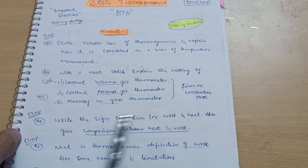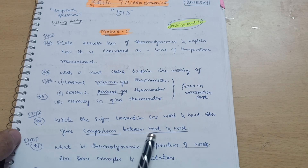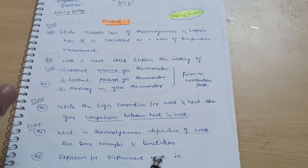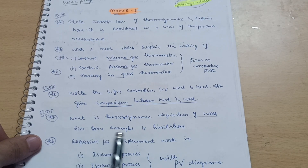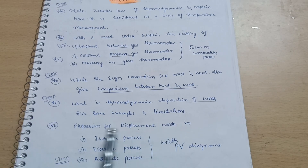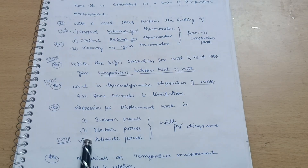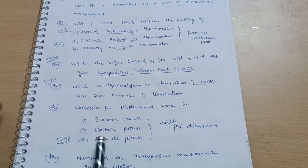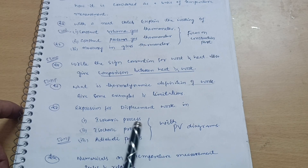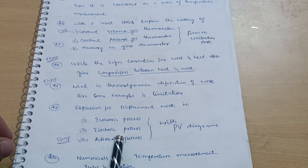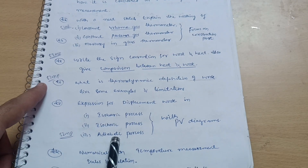In the video examination, if you draw the construction neatly, you can write the rest of the theory in your own words. Next is: write the sign convention for work and heat, and also give a comparison between heat and work — again an important question. Next is: what is the thermodynamic definition of work, give some examples, limitations, and derive expressions for displacement work — especially for the adiabatic process, as VTU asks this most of the time.